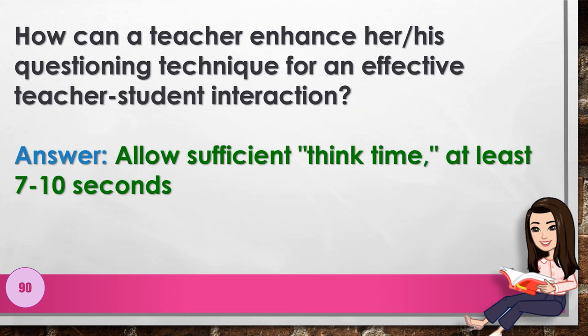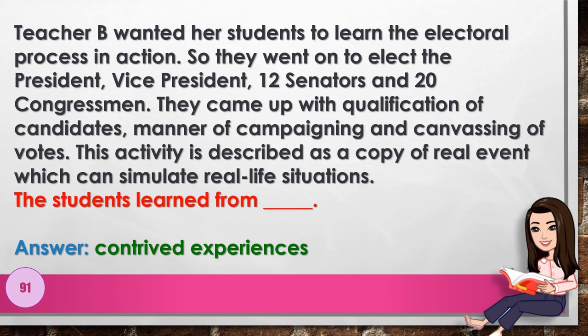Number 90: How can a teacher enhance questioning technique for effective teacher-student interaction? Answer: allow sufficient think time — at least 7 to 10 seconds. Number 91: Teacher B wanted students to learn the electoral process in action, so they elected a president, vice president, 12 senators, and 20 congressmen, and came up with qualifications of candidates, manner of campaigning, and canvassing of votes. This activity is a copy of a real event which simulates real-life situations. The students learned from blank. Answer: contrived experiences.